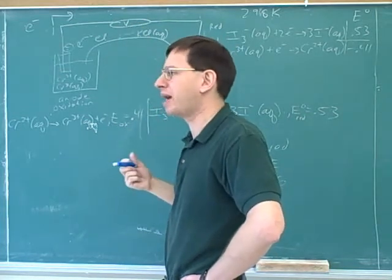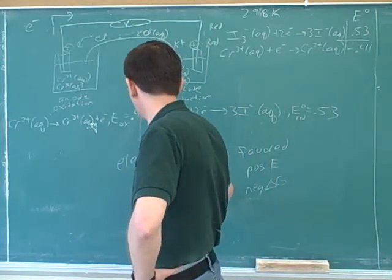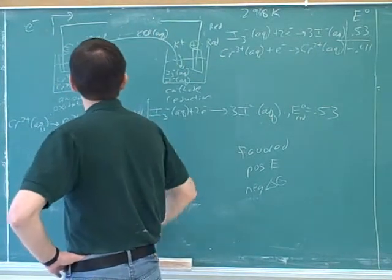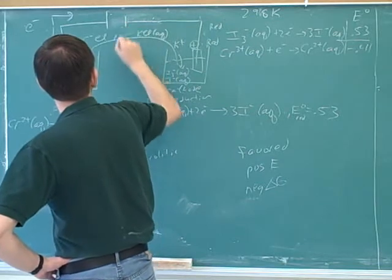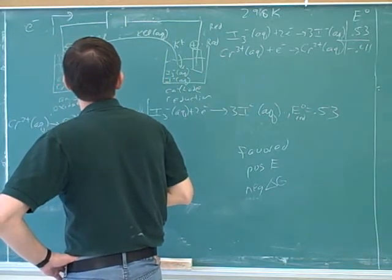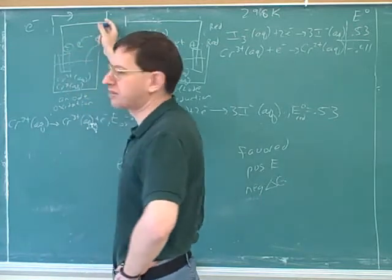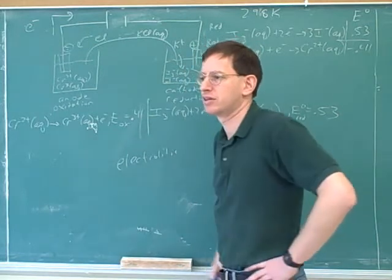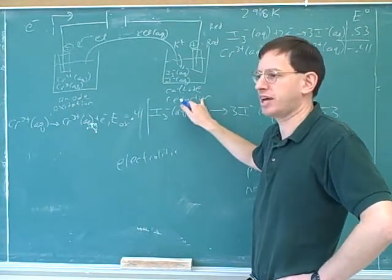But if we put in an outside power source - suppose for a second this was electrolytic and we're actually putting in an outside power source. So this would be an outside battery that we might put in. The electrons would still be moving towards the cathode. Electrons always move towards the cathode because that's always the site of reduction.